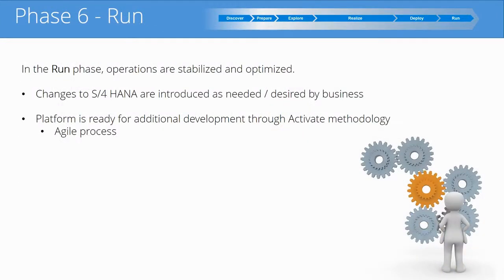And finally, we have the Run phase. Operations are stabilized and optimized in the Run phase. Changes to S4 HANA are introduced as needed and desired by the business — this is essentially business as usual. The business will find functions they need or want, and request incremental changes. The platform for S4 HANA is ready for additional development through the Activate methodology, utilizing the Agile process.